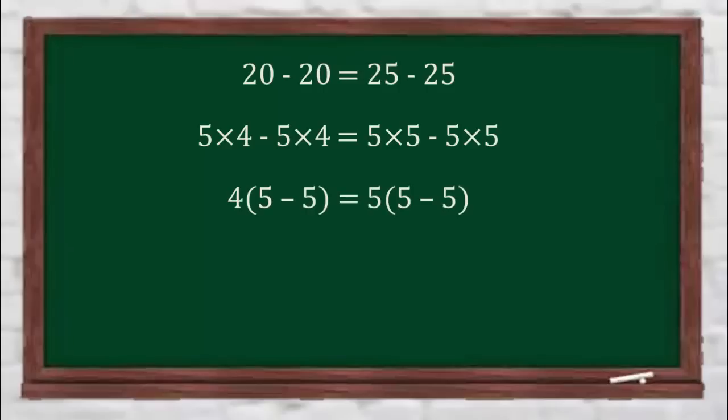The brackets on both sides have the same values, so cancelling out the common terms will give us 4 is equal to 5. And writing 4 as 2 plus 2 will give us the final equation: 2 plus 2 is equal to 5.